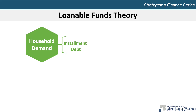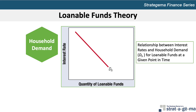This diagram depicts the relationship between interest rates and household demand for loanable funds at a given point in time. Notice the inverse relationship between the interest rate and the quantity of loanable funds demanded by households. At any moment in time, households in aggregate demand a greater quantity of loanable funds at lower rates of interest — in other words, they're willing to borrow more at lower rates.